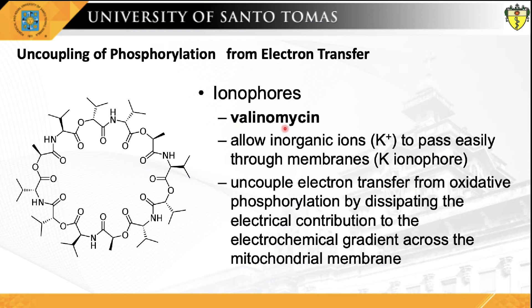Valinomycin is a naturally occurring dodecadepsipeptide used in the transport of potassium and as an antibiotic, obtained from several Streptomyces species. It is classified as an extremely hazardous substance in the United States. It is an ionophore that allows inorganic ions to pass easily through membranes, functioning as a potassium-specific transporter that facilitates the movement of potassium ions through lipid membranes down the electrochemical potential gradient. Valinomycin uncouples electron transfer from oxidative phosphorylation by also dissipating the electrochemical gradient across the mitochondrial membrane.